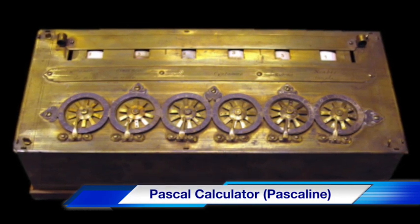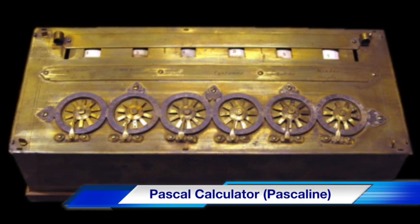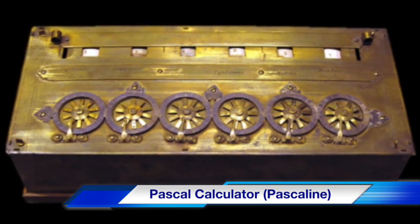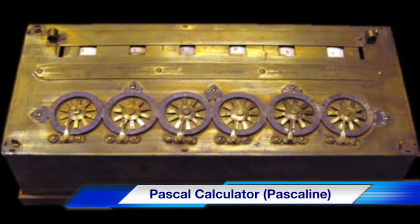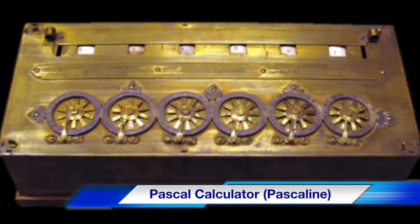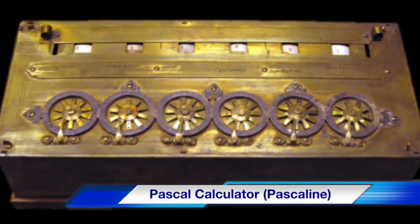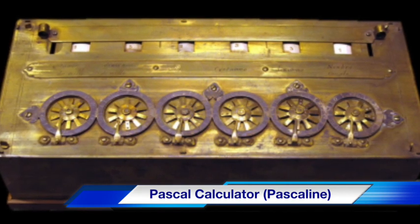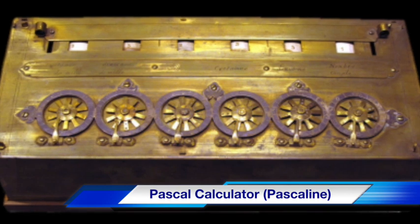The Pascal calculator, also known as the Pascaline, was a mechanical device developed by Blaise Pascal, a French mathematician and physicist. It was used for addition and subtraction. The Pascal calculator could not perform multiplication and division.